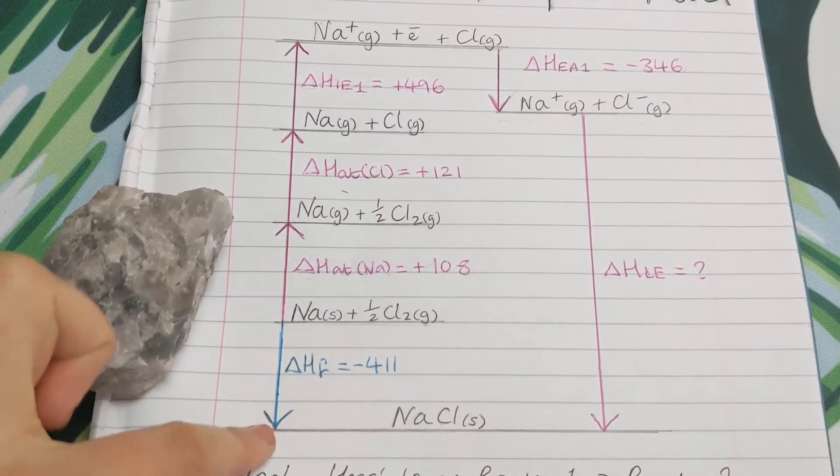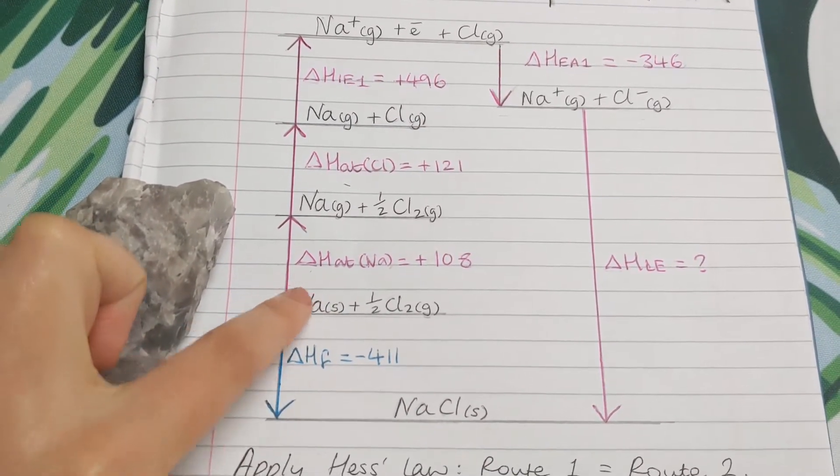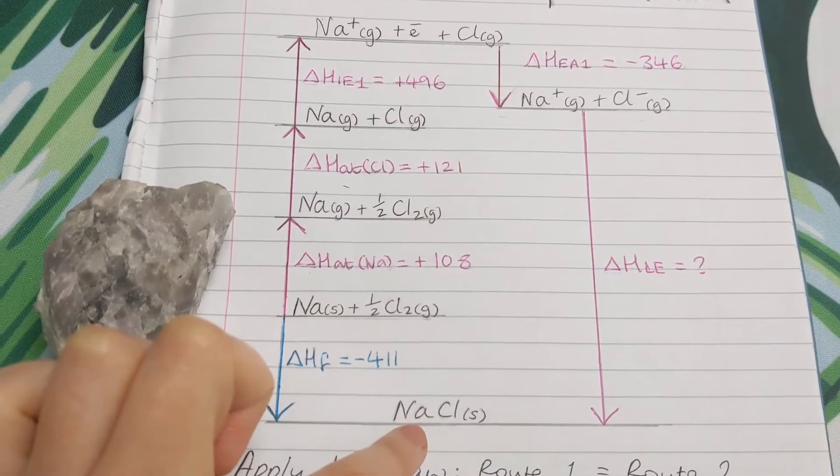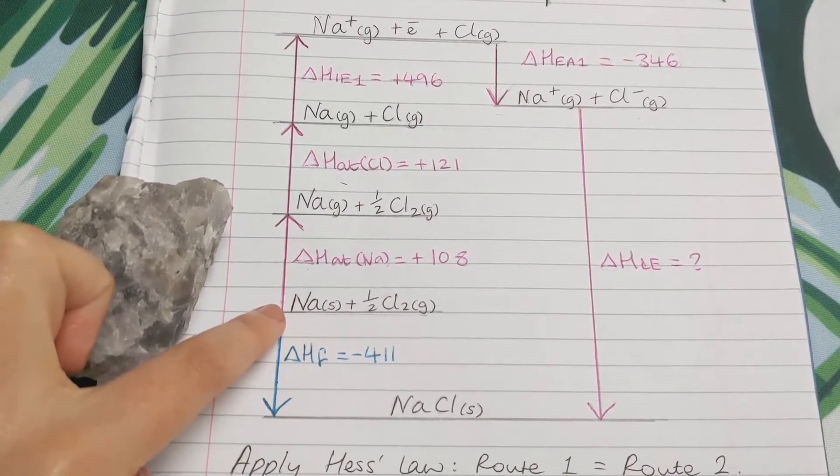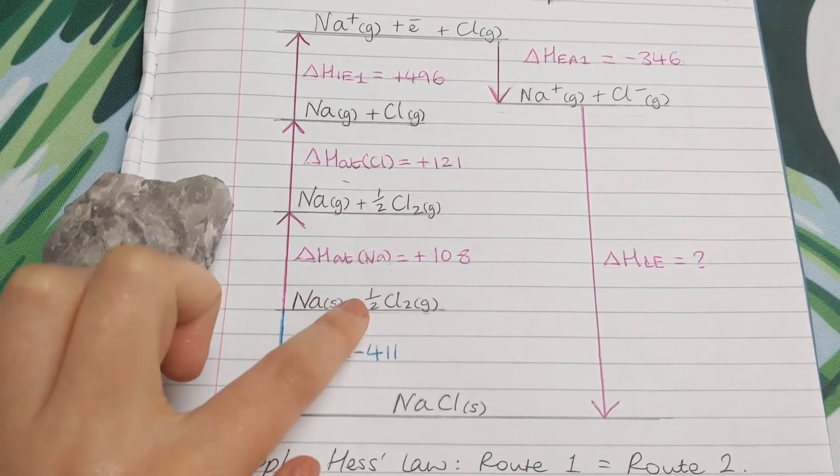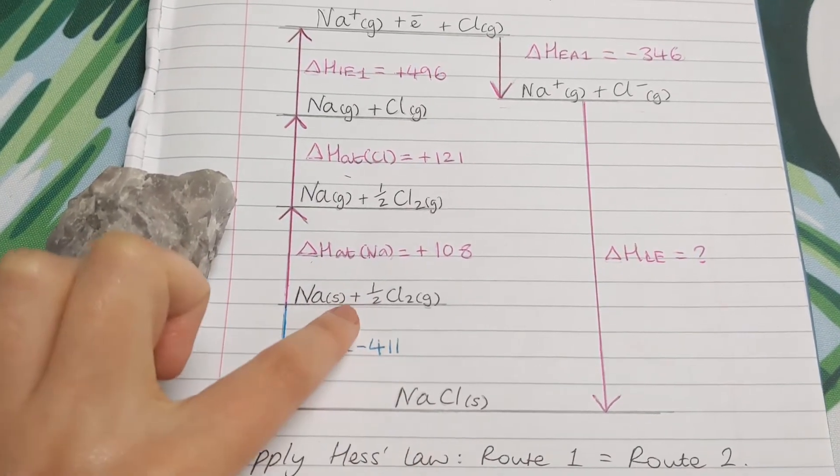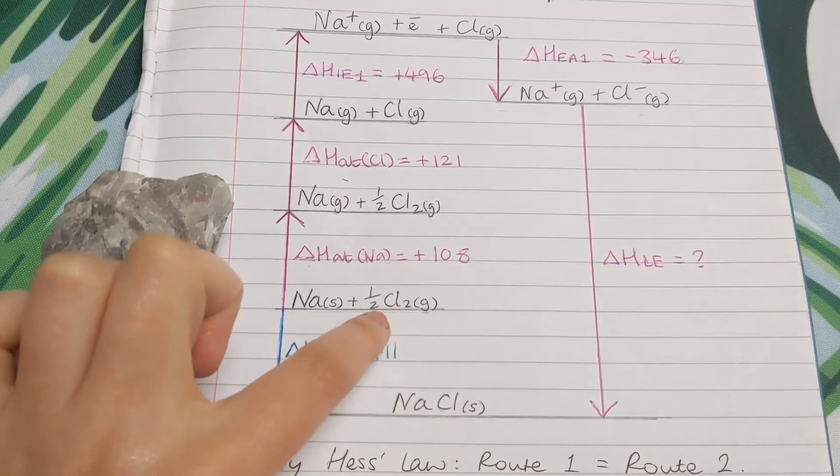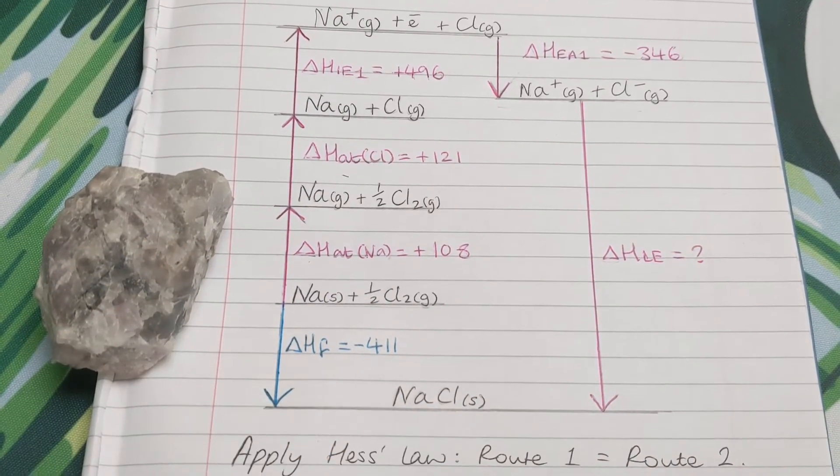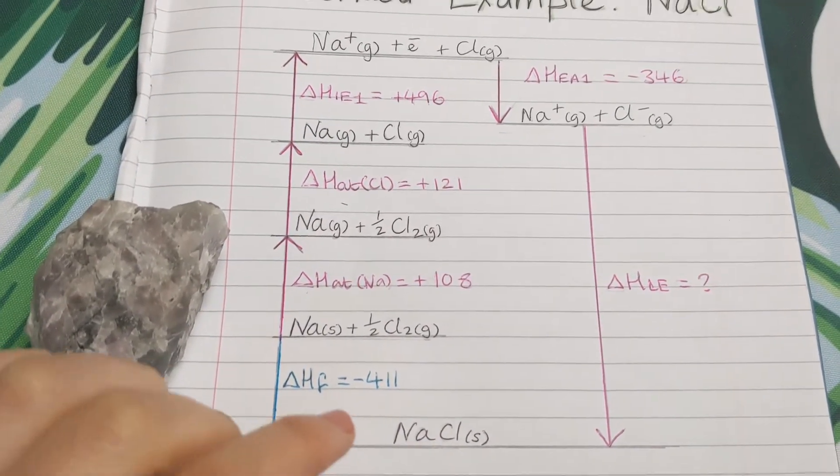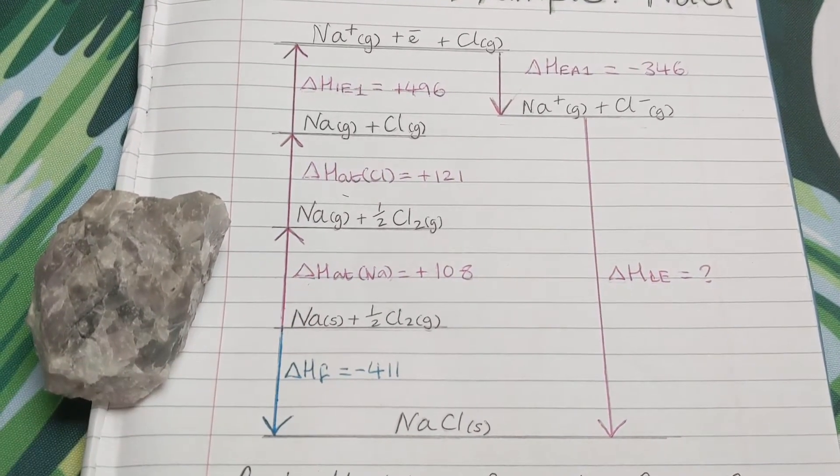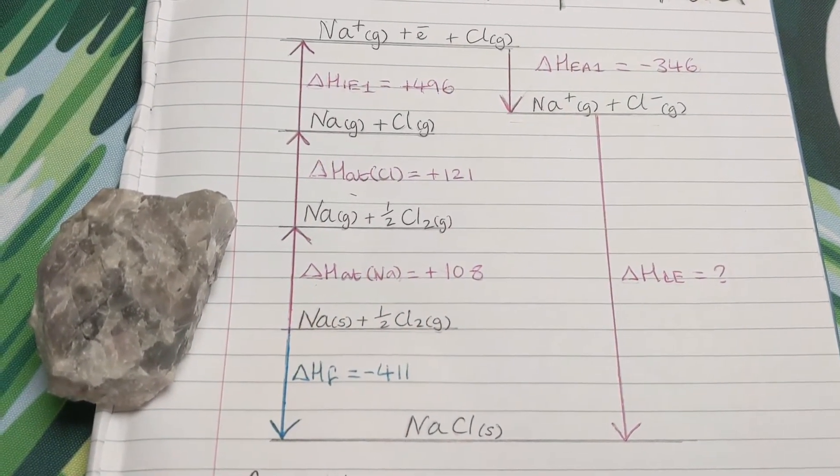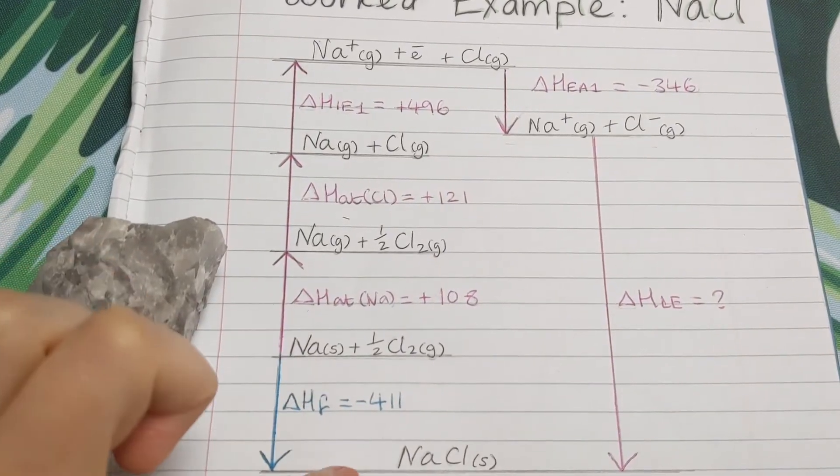So this is the energy change of formation. We're making the ionic lattice solid from the elements in their normal states. And I've put a half in front of the Cl2 just to balance it. So we've got one Cl altogether there and one Cl there. So we're just looking at the balanced equations and the processes first before we work anything out. So we're forming a lattice here.